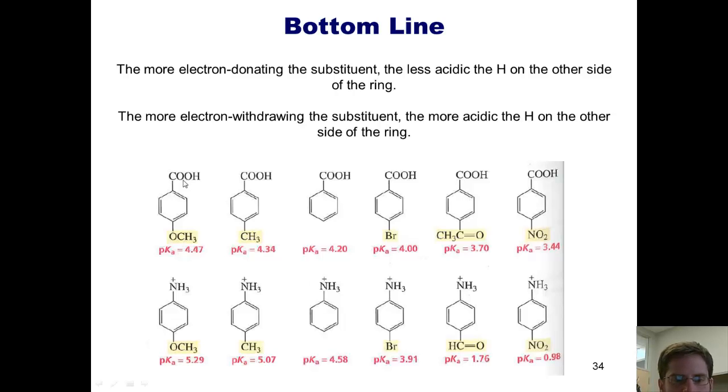Note that everywhere we have an acidic group, like these carboxylic acids here, if we have donating substituents on the opposite side of the ring, it actually increases the pKa, making these hydrogen atoms less acidic. As we get to groups that begin to be more and more withdrawing, you'll see that the pKa's decrease, meaning that these hydrogens are more acidic. Why? Because we now have partial positive charges being developed here, which weaken the bond between the oxygen and the hydrogen.